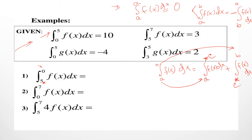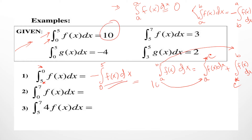Similarly, 0 in the question is the upper limit, whereas in the given data it is the lower limit — the positions of 0 and 5 are changed. So you write the integral as is but change the positions of 5 and 0 and change the sign. From 0 to 5, f(x) dx equals 10, so you write -10 as the answer.